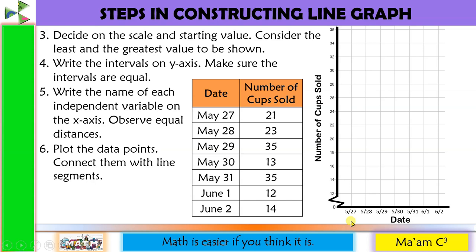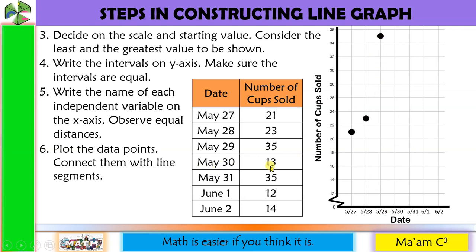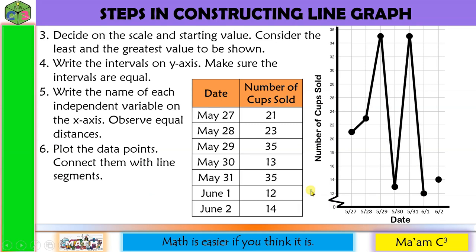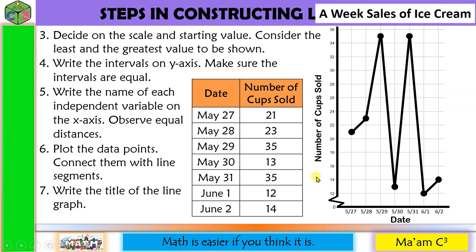Step six, plot the data points and connect them with line segments. For May 27, cups sold is 21 — at the middle of 20 and 22. May 28, 23 cups. May 29, 35 cups. May 30, 13 cups. May 31, another 35. June 1, 12 cups. June 2, 14 cups. Connect them with six line segments. Step seven, write the title of the line graph: A Week's Sales of Ice Cream.